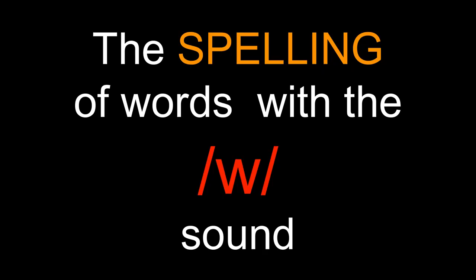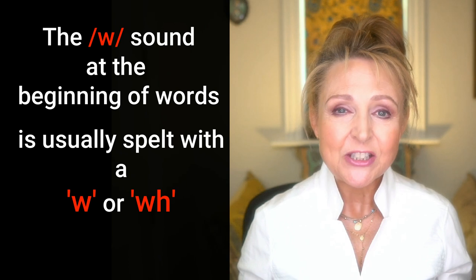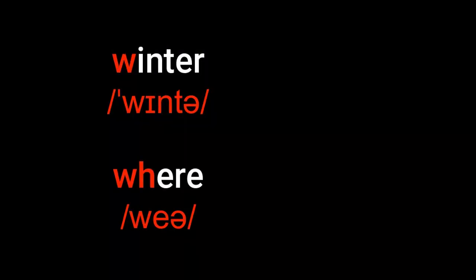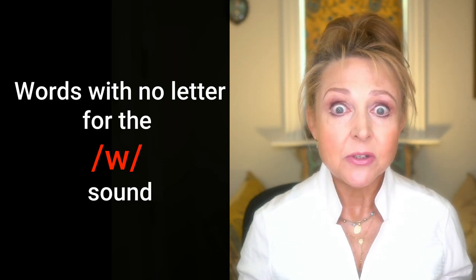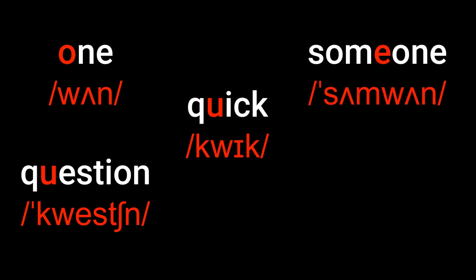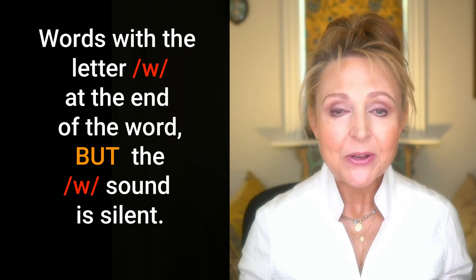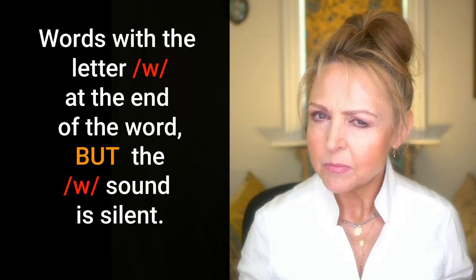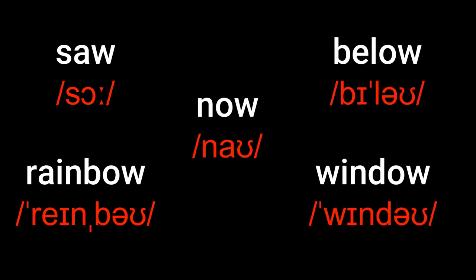Now let's look at the spelling of words with the W sound. At the beginning of words they're usually spelt with the letter W or WH, like 'winter' or 'wear.' You also have the sound in the middle of words like 'away' and 'towards.' And then there are words with no letter for the sound — for example: 'one,' 'question,' 'quick,' 'someone,' 'require.' And last of all, there are words with the letter W at the end, but the W sound is silent — for example: 'saw,' 'rainbow,' 'now,' 'below,' and 'window.'